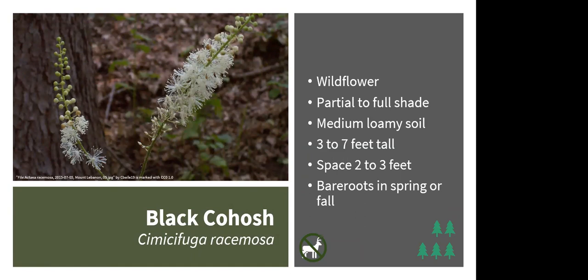Black cohosh — also called black snakeroot or bugbane — is not closely related to blue cohosh. It's rather rare in Illinois but is available from native plant nurseries. It can grow quite large, 3–7 feet tall, so it can serve as a structural element as well. It is deer and rabbit resistant because the foliage is toxic. It tolerates some dry periods but prefers medium soil in partial to full shade. Unlike spring ephemerals, it blooms May through September. Plant bare roots in spring or fall.